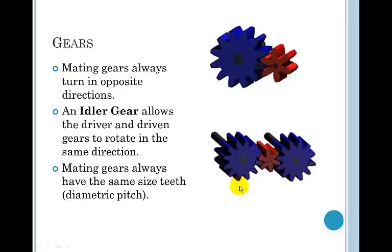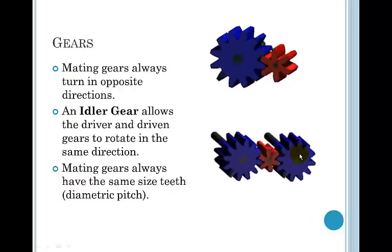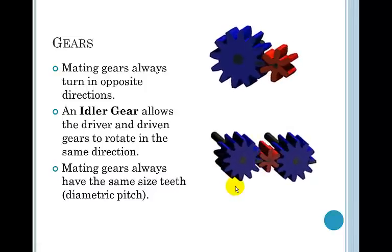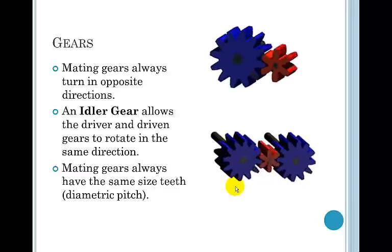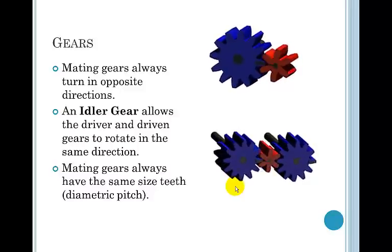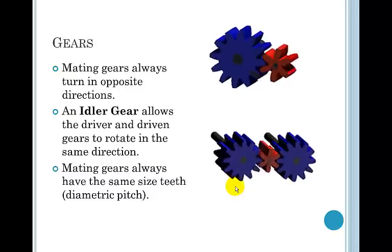If you look at this one on bottom, you can see that the first blue gear is the driver and it's rotating clockwise. Then there's an idler gear in the middle, and that idler gear turns counterclockwise. Then the third gear turns clockwise as well.